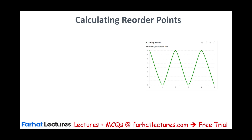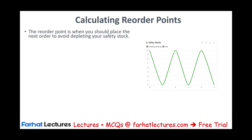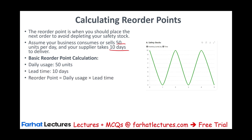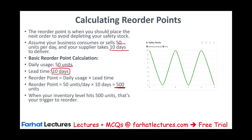Let's compute the reorder point. The reorder point is when you should place the next order to avoid depleting your inventory. It's a factor of how many units you consume per day and how long it takes to receive those units. Assume your business consumes 50 units per day and your supplier takes 10 days to deliver. Daily usage is 50 units; lead time is 10 days. The reorder point = 50 × 10 = 500 units. When your inventory hits 500, that's your trigger to reorder — you'll consume those 500 units over the 10-day lead time and be replenished just in time.